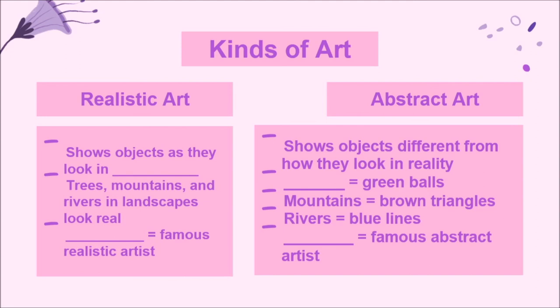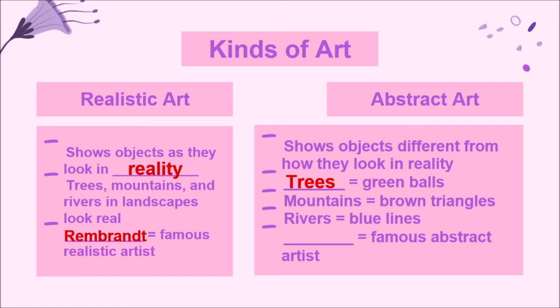Let's answer the kinds of art. For realistic art: it shows objects as they look in reality — trees, mountains, and rivers in landscape look real. The famous realistic artist is Rembrandt. For abstract art: it shows objects different from how they look in reality. Green balls represent trees, brown triangles represent mountains, and blue lines represent rivers. The famous abstract artist is Picasso.